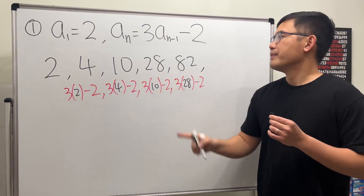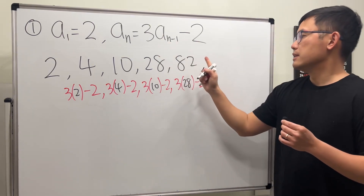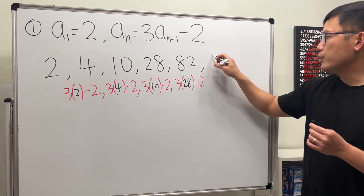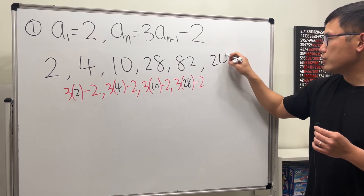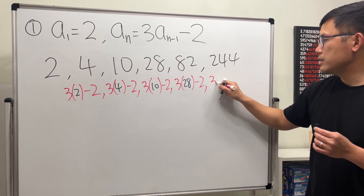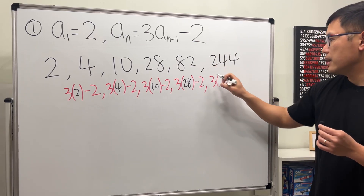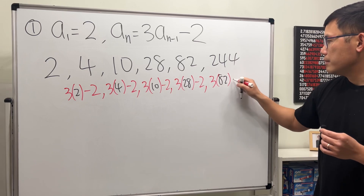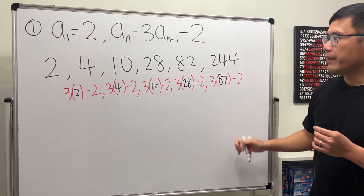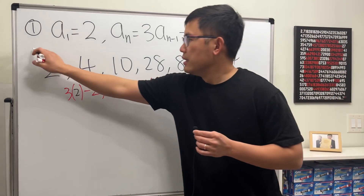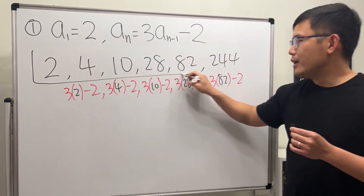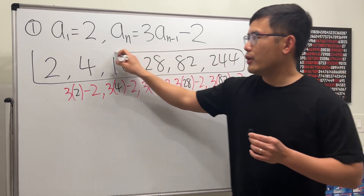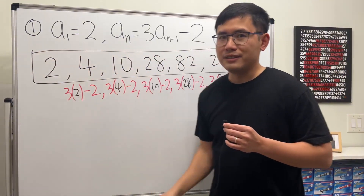One more: 3 times 82, minus 2, we end up with 244. So it's 3 times 82 minus 2. I didn't work this out in my head — I remembered the answer.